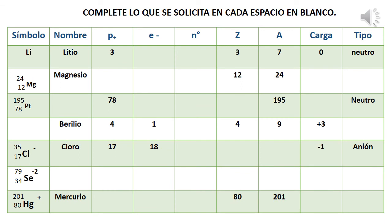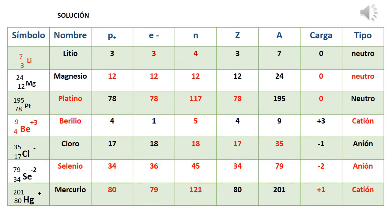A partir de lo estudiado, se invita a realizar la siguiente práctica y anotar para cada símbolo representado: su nombre, número de protones, número de electrones, número de neutrones, número atómico Z, número másico A, carga y tipo. Recuerden que en la tabla periódica la masa se representa en decimales, por lo que debe redondearse aplicando las reglas de redondeo. En la tabla siguiente se puede encontrar la solución al ejercicio resuelto para revisar y verificar las respuestas.